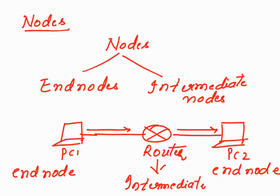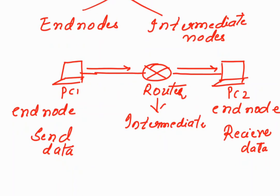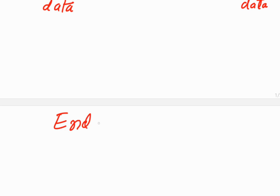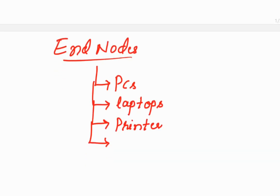It's not that PCs will always be end nodes. The functioning of end nodes is: in every network, the nodes that are sending data and the nodes that are receiving or accepting the data are end nodes. End nodes can be PCs, laptops, printers, and mobile phones.